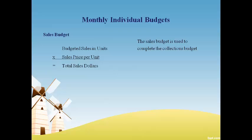Each individual budget is done by month for 12 months. The process begins with the sales budget. Sales in units is projected by the sales management team, and the units are multiplied by the sales price per unit to get the total sales dollars. The sales budget will be used to complete the collections budget for sales on credit.